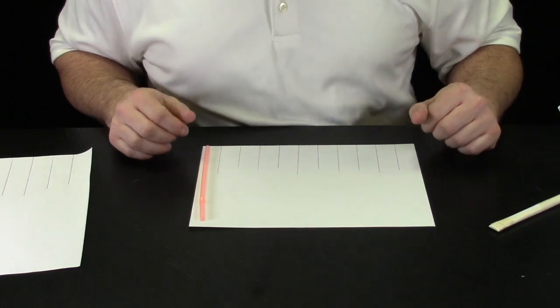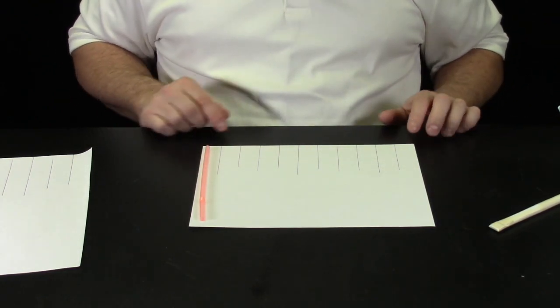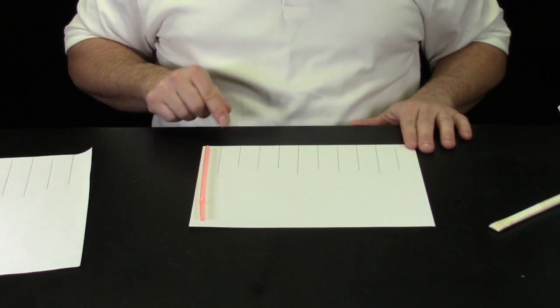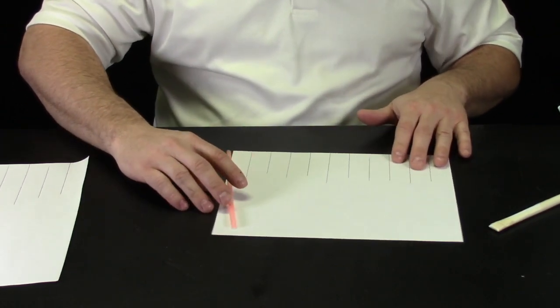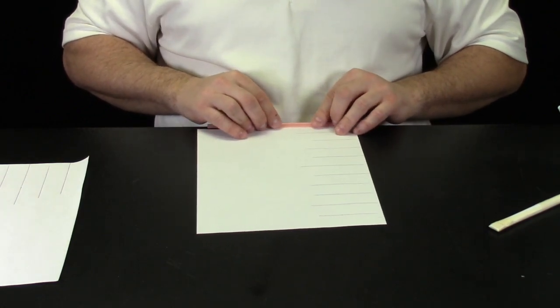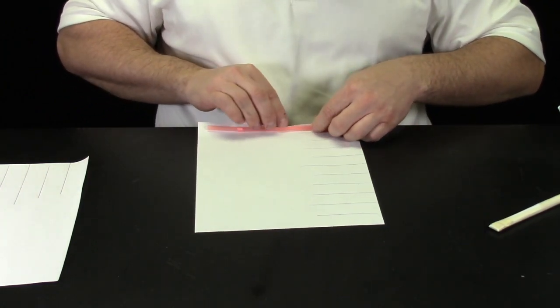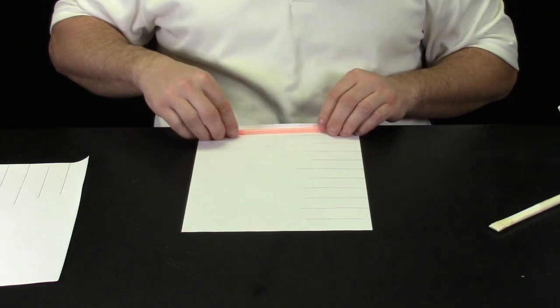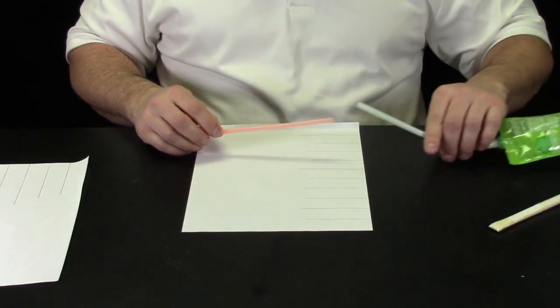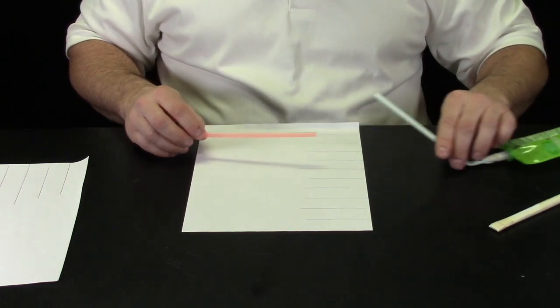We've zoomed in so you can get a better look at what we did here. I used the ruler to make evenly spaced lines and those lines are going to help me make my rocket. I'm just going to simply lay my straw along the paper and now I'm going to start rolling. I don't want to roll too tightly because I want my rocket to slide off of my straw launcher.